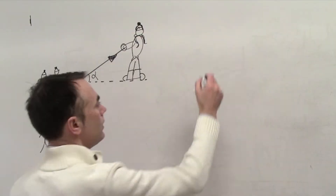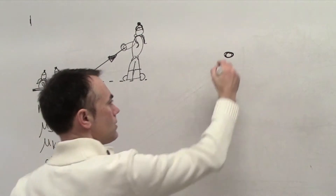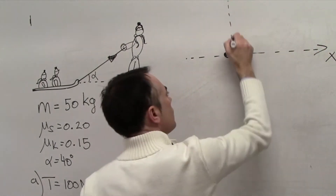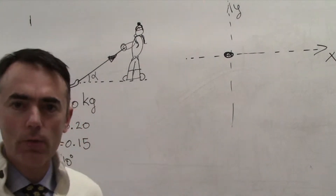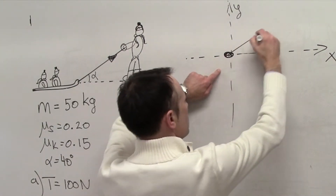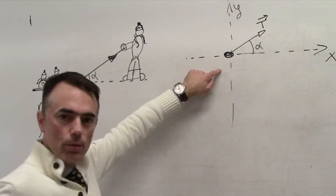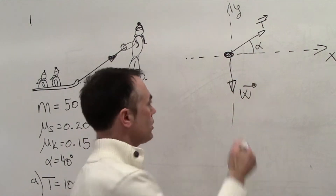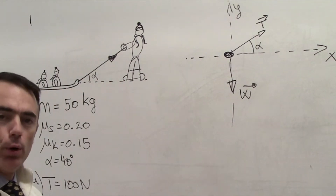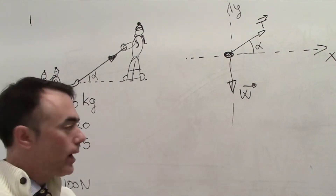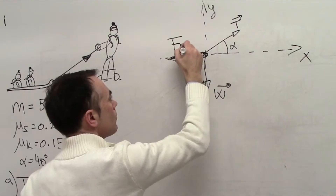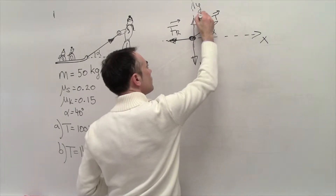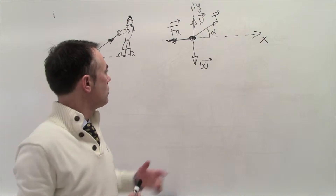Let's draw the free body diagram. We treat all the mass as a point particle and define our x-axis and y-axis, noting where positive and negative directions are. We have the tension T at angle alpha of 40 degrees, the weight, friction acting to the left since the person is pulling the sled to the right, and of course the normal force. Those are the four forces.